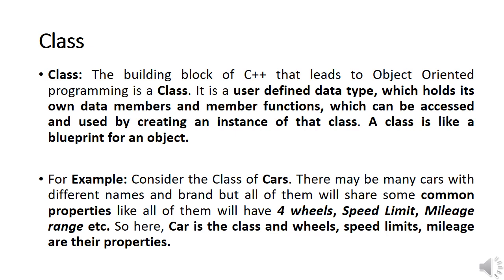One of the basic concepts of OOP is class. A class is similar to a structure in C++ — it is a user-defined data type which holds its own data members and member functions. Data members and member functions can be accessed by creating an instance of that class, so a class is also called a blueprint for an object.